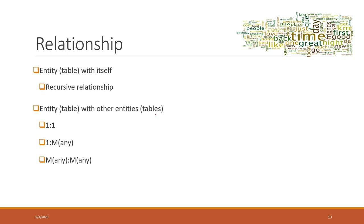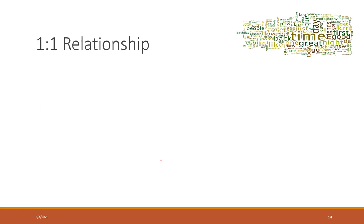We will not cover the self-relationship type in this class. We will focus on entity with other entities. Specifically, there are three types of relationship between different tables: one-to-one relationship, one-to-many relationship, and many-to-many relationship.